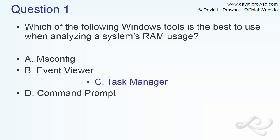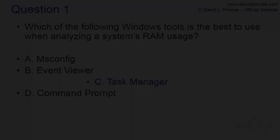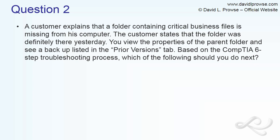That's question one — we'll go a little faster through the rest. Question 2: A customer explains that a folder containing critical business files is missing from his computer. The customer states the folder was definitely there yesterday. You view the properties of the parent folder and see a backup listed in the Prior Versions tab. Based on the CompTIA six-step troubleshooting process, which of the following should you do next?